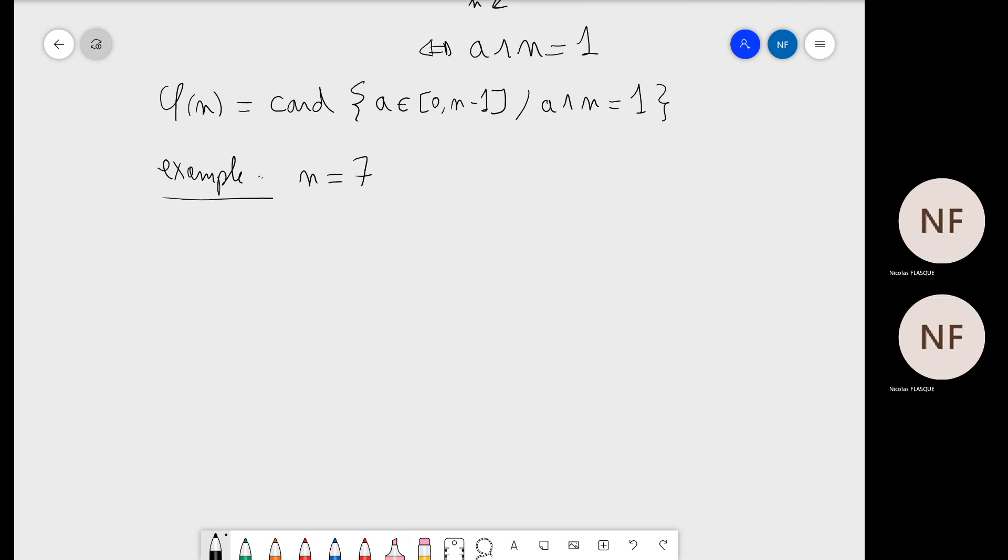n is equal to seven. What is the value of phi of n, which is phi of seven? We have the list of elements of Z over 7Z, which is...